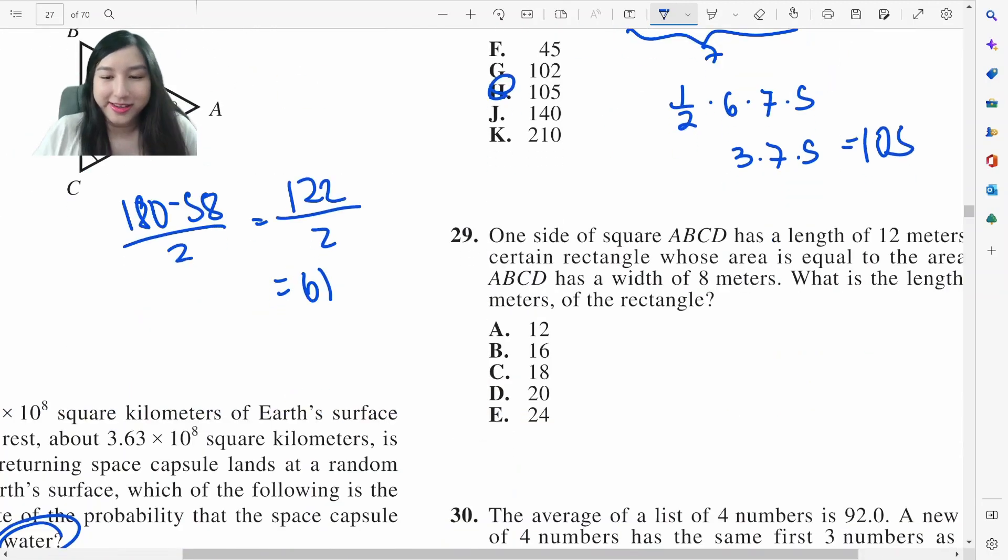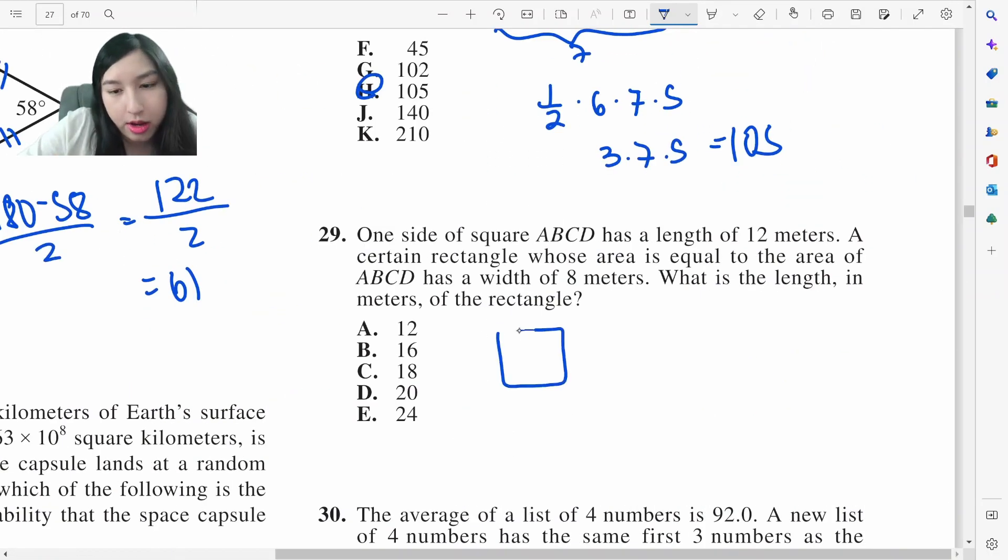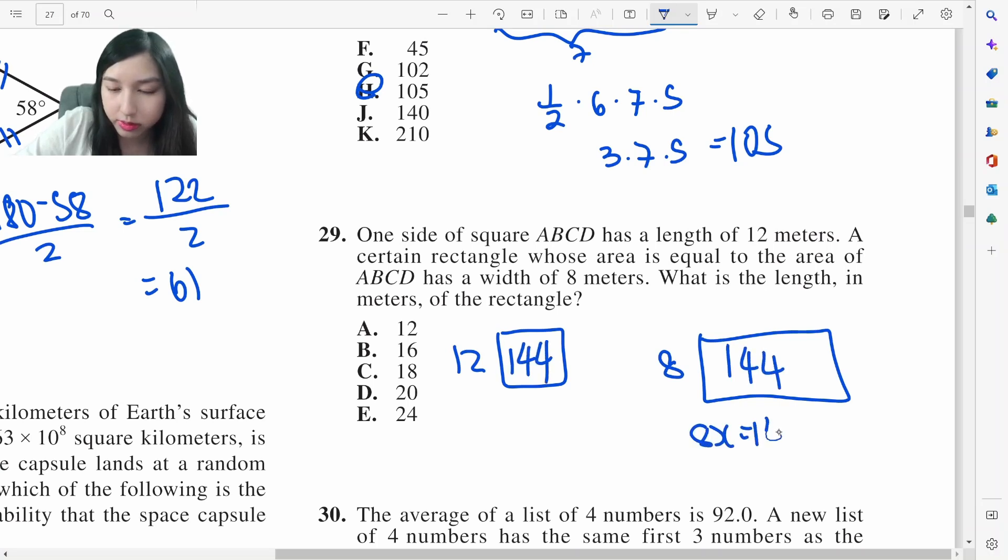A square has a side of 12. A rectangle has the same area. Same area means this area is 144. This area is also 144. 8 times x equals 144. x is 18.